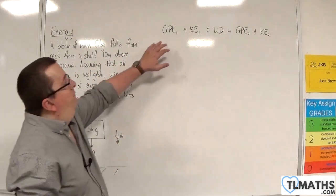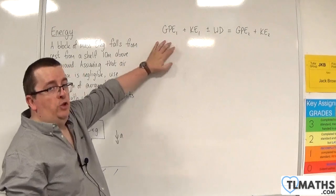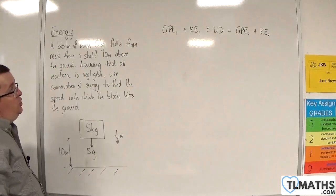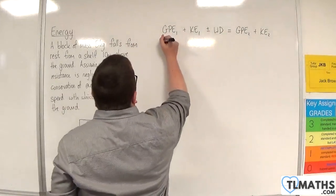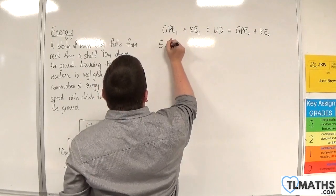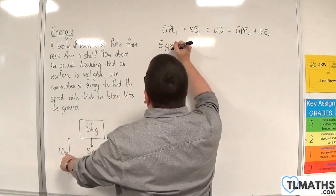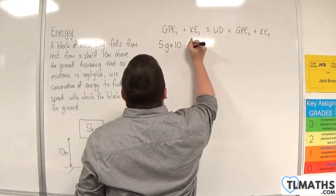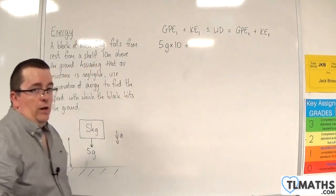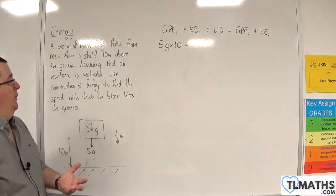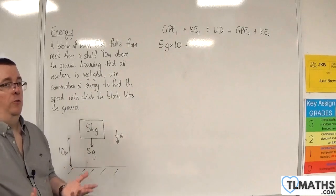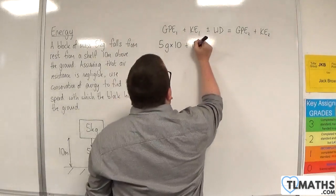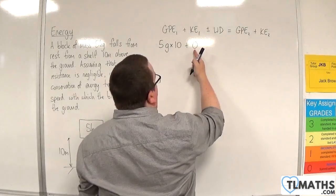Now, the initial gravitational potential energy, MGH, will be M times G times H, which is 10. Now, the initial kinetic energy will be 0 because the initial speed is 0 because we're starting from rest. So half MV squared where V is 0.